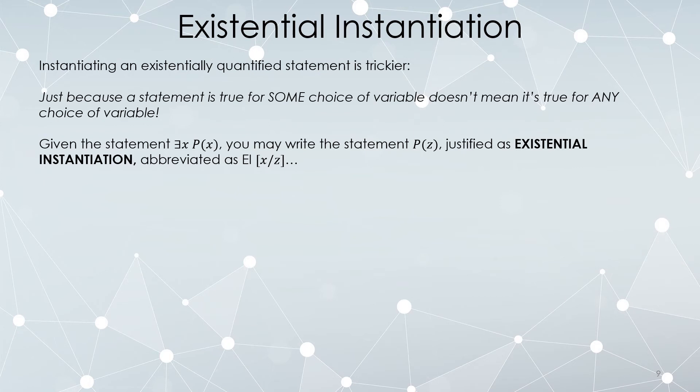For example, if you have the statement there exists an x so that P(x) is true, you are allowed to write P(z) existentially instantiating in the following notation, but the variable z cannot exist anywhere as a free variable.